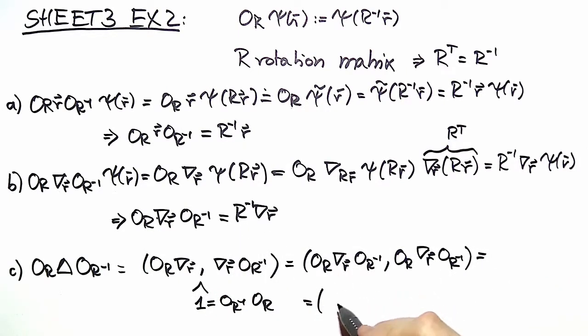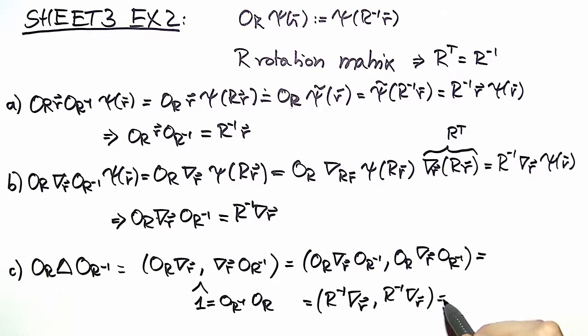So here we arrive at R to the minus one times the gradient, scalar product with R to the minus one times the gradient. Because the scalar product is a bilinear operation we can draw this R out and this R out. Then this gets transposed which means it is inverted, which then leaves us with R to the minus one times R, which gets annihilated and leaves us with a 1. And the scalar multiplication of two gradients which is nothing else than the Laplacian.